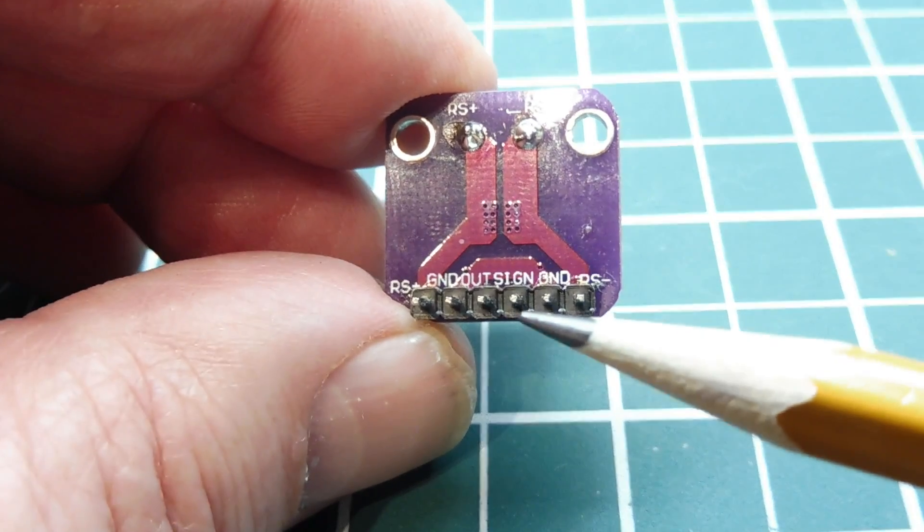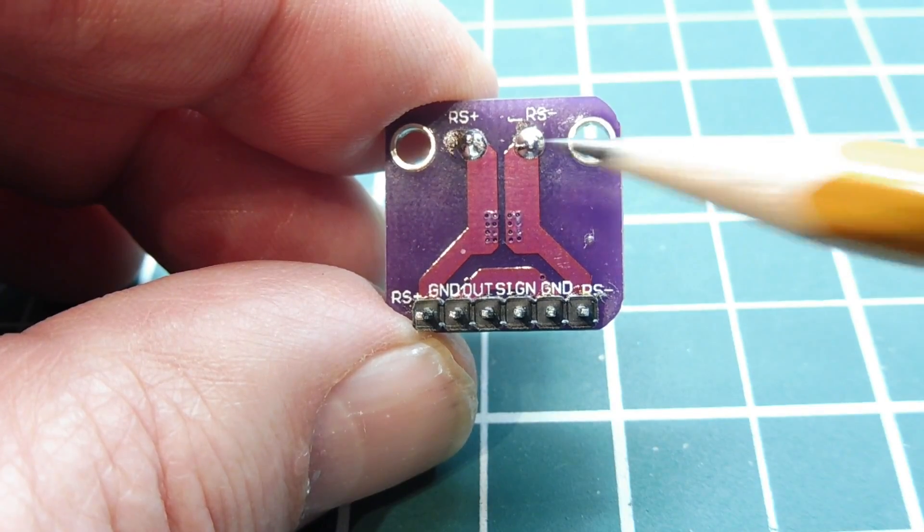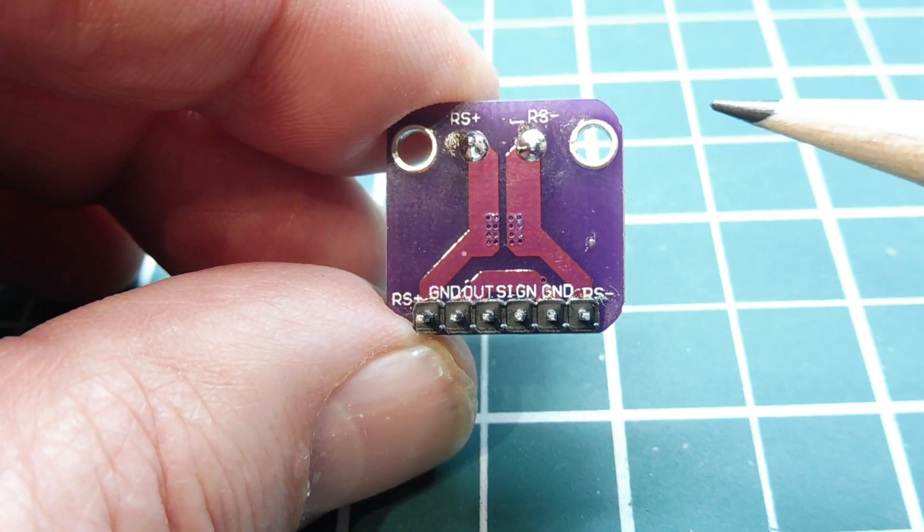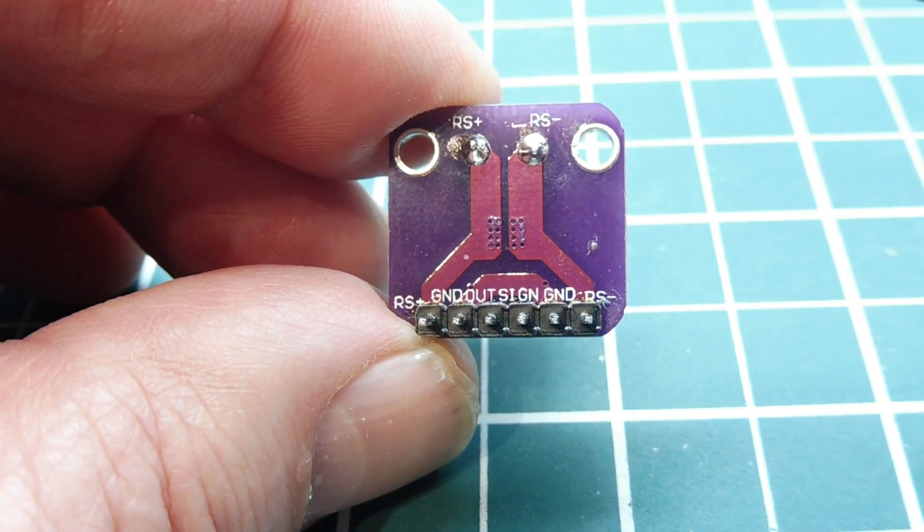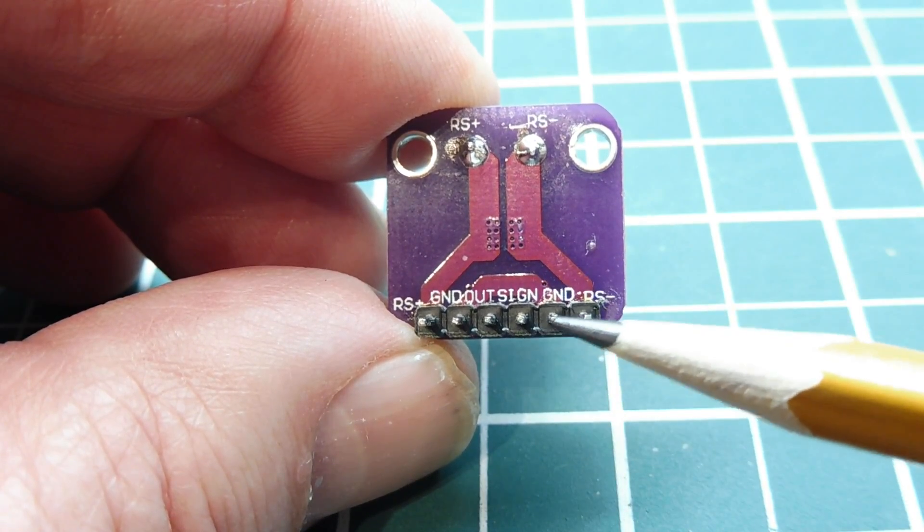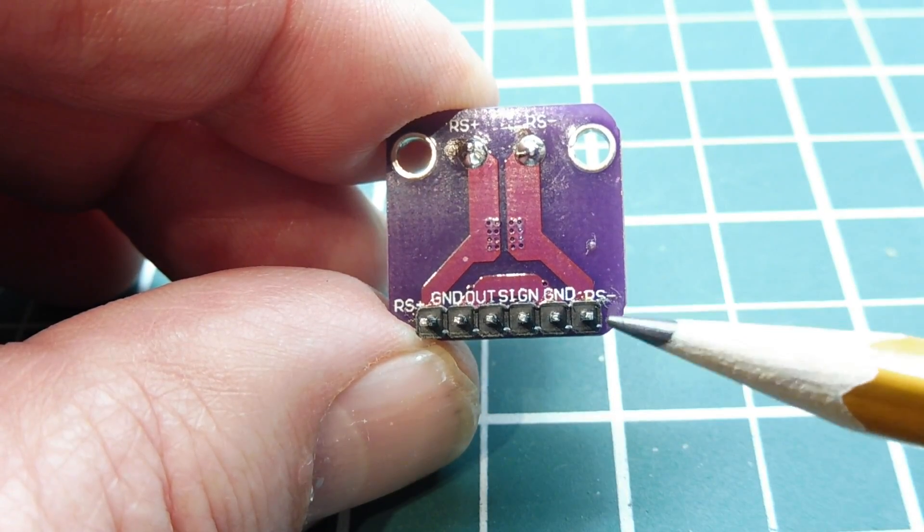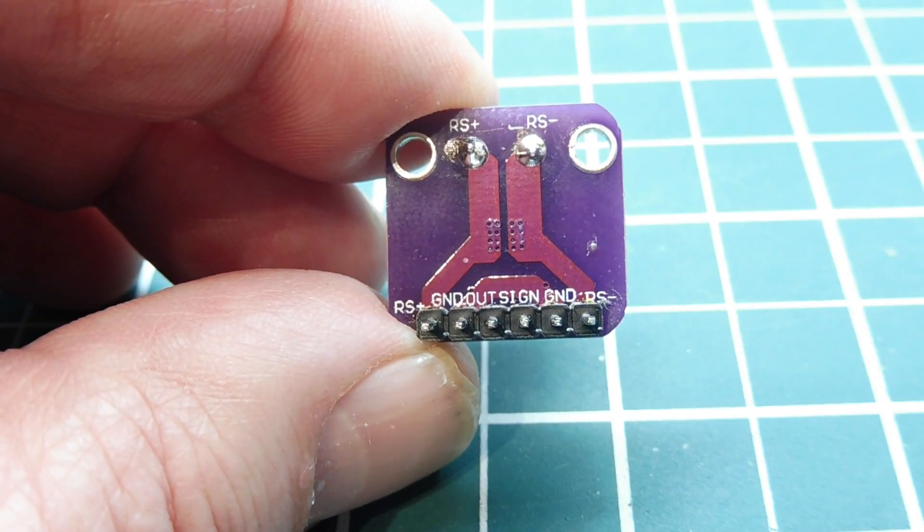The next pin is the sign pin. It will tell which way the current is flowing, if it's flowing in this direction or that direction. In battery powered operation, it will actually give us an indication of discharge and charging. The next pin is a ground pin, which is the same as the other ground pin. And the last pin is our sensing resistor minus, negative.